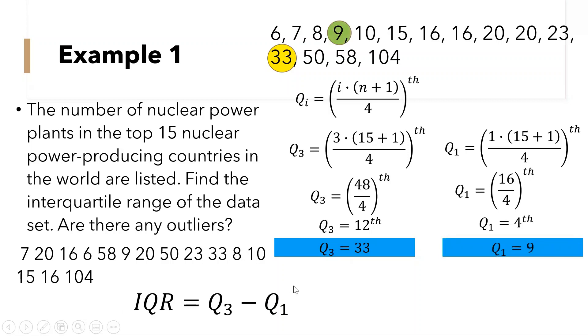So to find the IQR, we just need to subtract the quartile 3 and the quartile 1. So 33 minus 9. Now the interquartile range is 24.